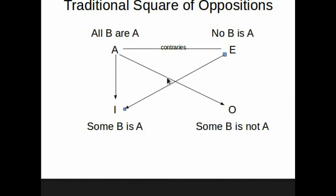The other contrary is between E and I. So, if E is true, I is false. So, if no B is A, some B is A is false. If no B is A is false, some B is A. If some B is A is true, no B is A is false. So, they exclude each other. They're contradictory.